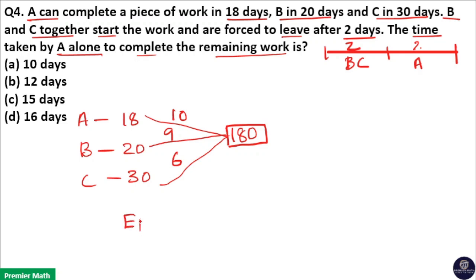Here efficiency of B and C is 9 plus 6, 15 units. That means B and C can complete 15 units of work in a day. But here B and C worked for 2 days. That means in 2 days they completed 2 into 15, 30 units of work.